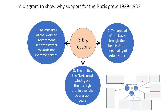Hello E11. You should now have completed this diagram to show why support for the Nazis grew 1929 to 1933, and you should have recognized there are three big reasons to explain this growth in support: the mistakes of the Weimar government that sent voters looking for alternatives, the appeal of the Nazis through their beliefs and the personality of Adolf Hitler, and the tactics the Nazis used which gave them a high profile over the depression years.